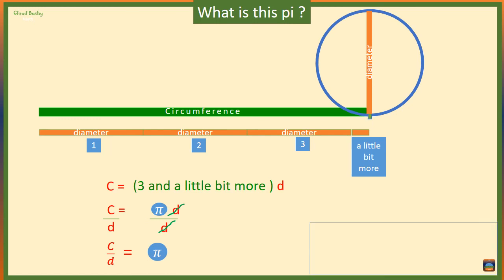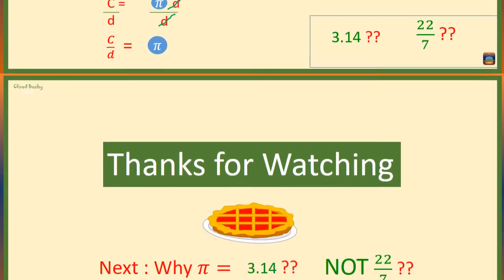Of course, sometimes we take pi to be 3.14 or 22 over 7. Now how much is this little bit more is what we'll be looking at in the next video, in which we will explore the numerical value of pi.